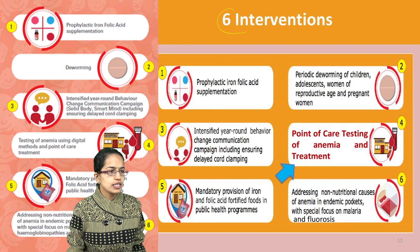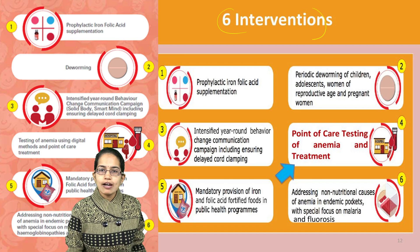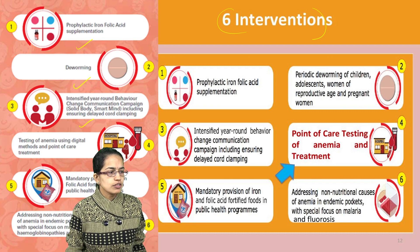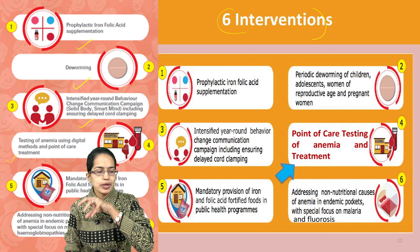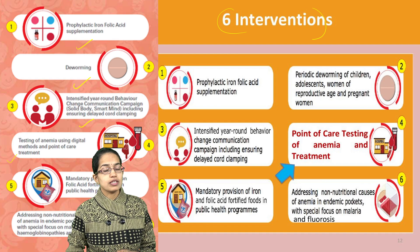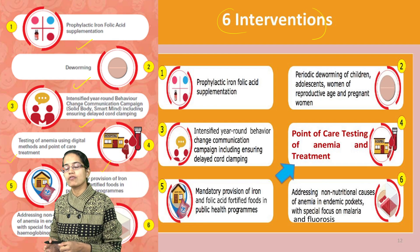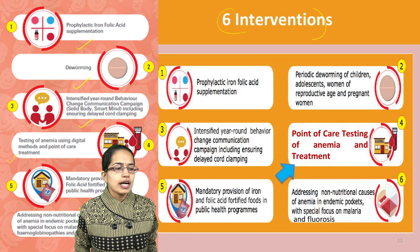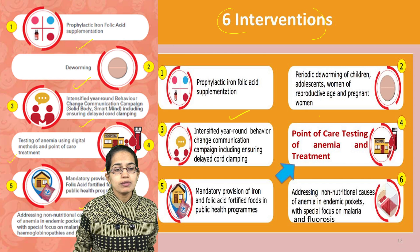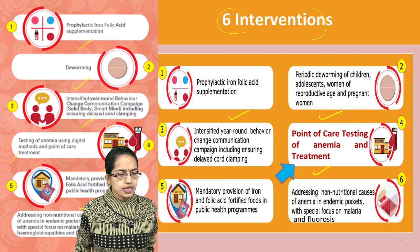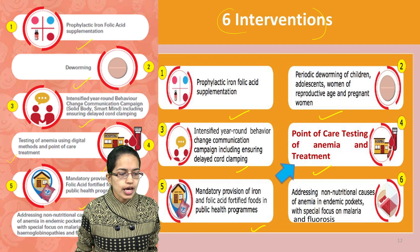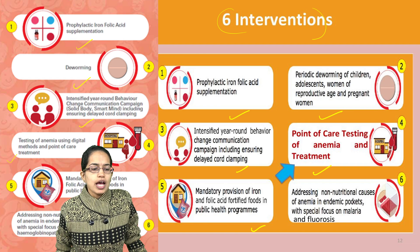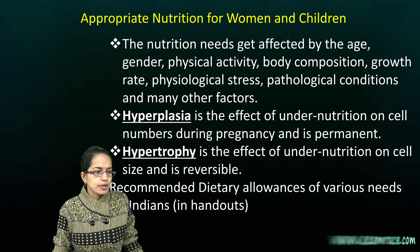The 6 interventions include folic acid, deworming, intensification of behavioral change, testing of anemia using digital methods, provisions for fortified food, and non-nutritional cases in endemic areas where there is higher prevalence of anemia, mainly in regions with higher fluorosis and malaria cases. Under the interventions, we focus on supplements, periodic deworming, care of anemia patients, public awareness campaigns, iron and folic acid fortification, and endemic pockets.